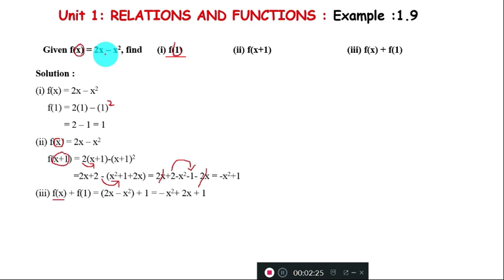Therefore, f(x) + f(1) = 2x - x² + 1, which can be written as -x² + 2x + 1. That's the final result.